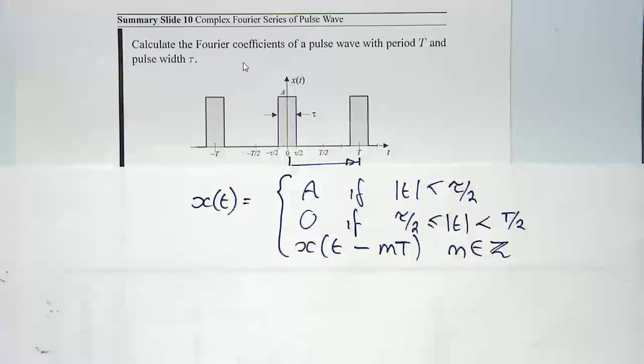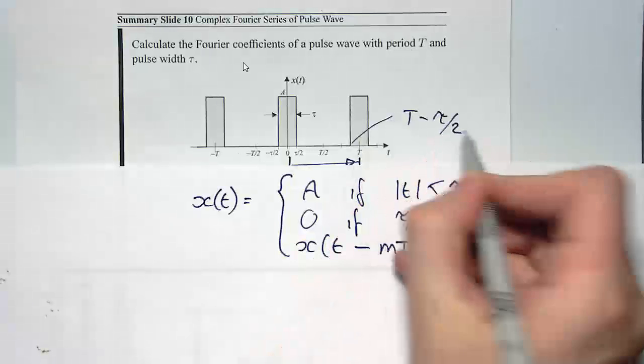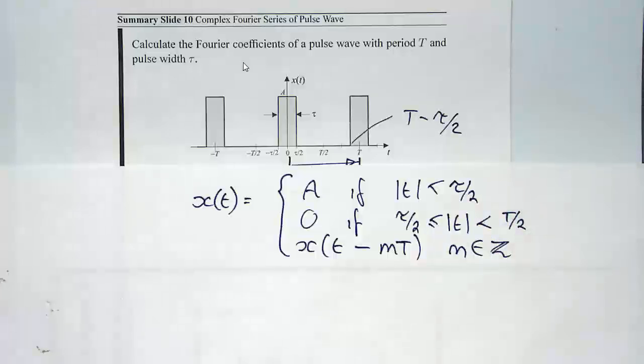If you went from integral from zero to capital T, you'd have to integrate X of T between zero and tau on two, where the value would be A. You'd have to integrate from tau on two to T minus tau on two, because this point here, if you ever think about it, is T minus tau on two. And the value of the signal at that point is zero, so the integral is zero. And then you'd have to integrate from T minus tau on two to T, where it's value of A again. And by this point, you've probably lost the will to live. So you should instantly recognize that you should integrate from minus capital T on two to plus capital T on two, because there are still three integrals, but two of them are now trivial, because they're zero.